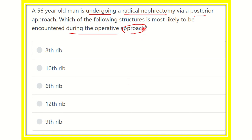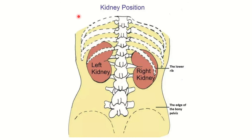We need to find out which rib is located in relation to the kidney. Looking at the picture, we can see the left kidney and the right kidney. When approaching posteriorly, we can see the 12th rib — the lower rib — which will be encountered to reach either kidney.